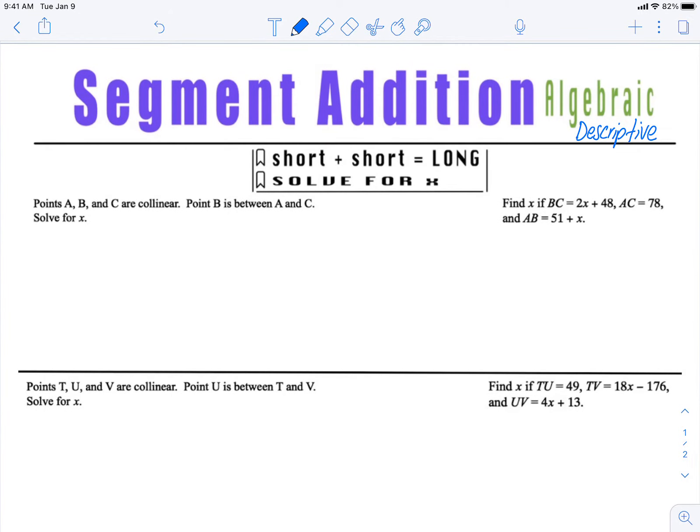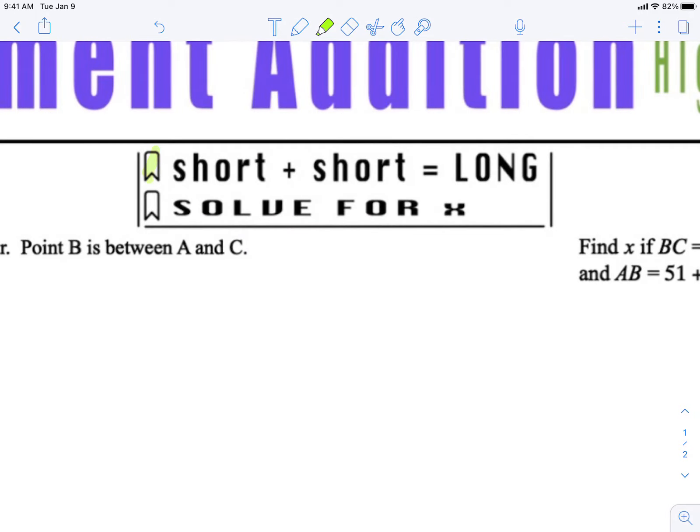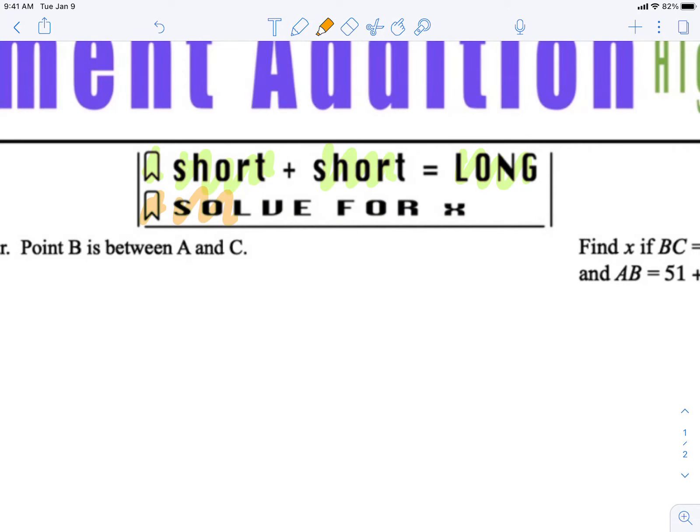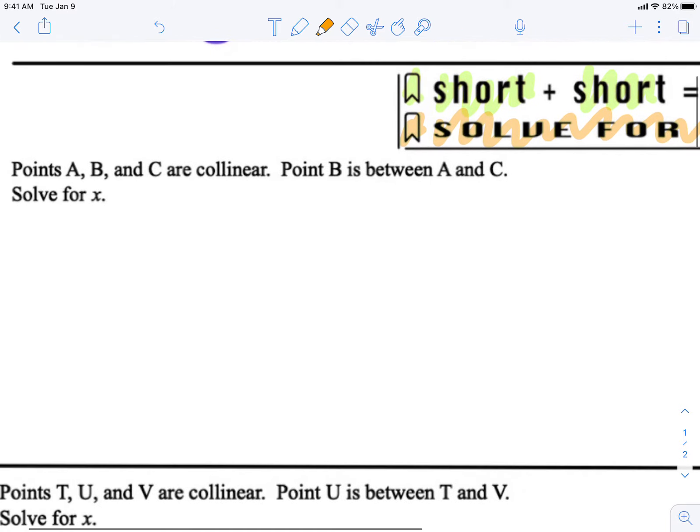In these problems, you're describing the line segment. It's up to you to draw the line segment, do short plus short equals long, and solve for x. As we can see here, we're remembering that short plus short is equal to long, and we also remember that we are solving for x, solving for the variable.